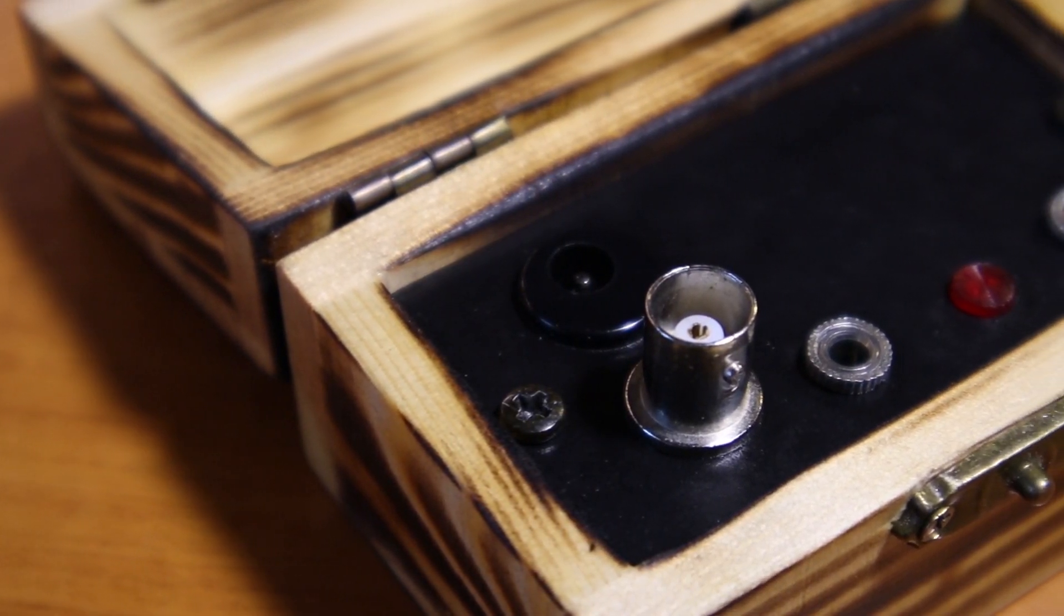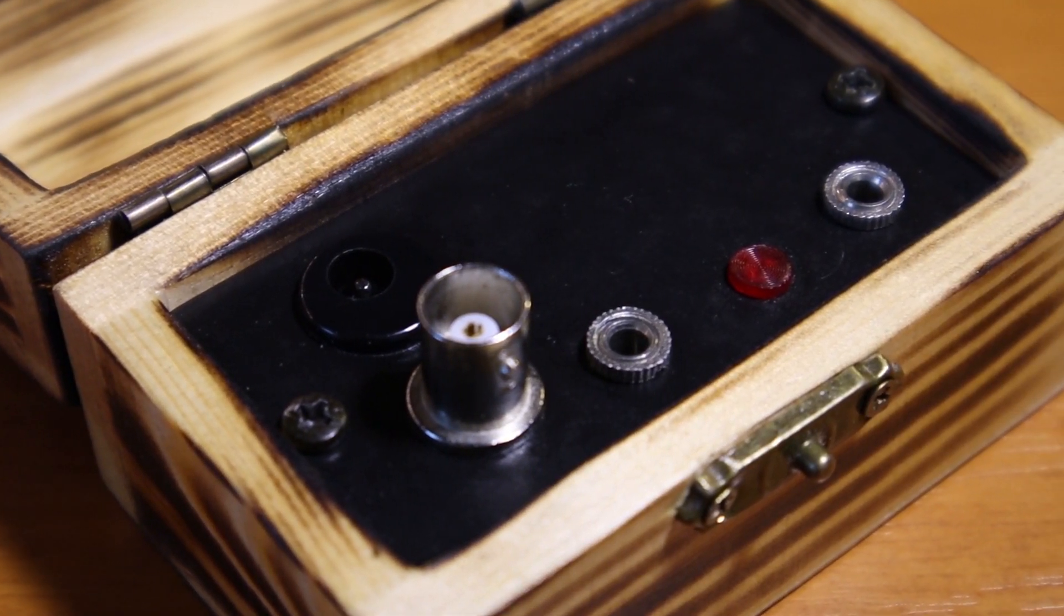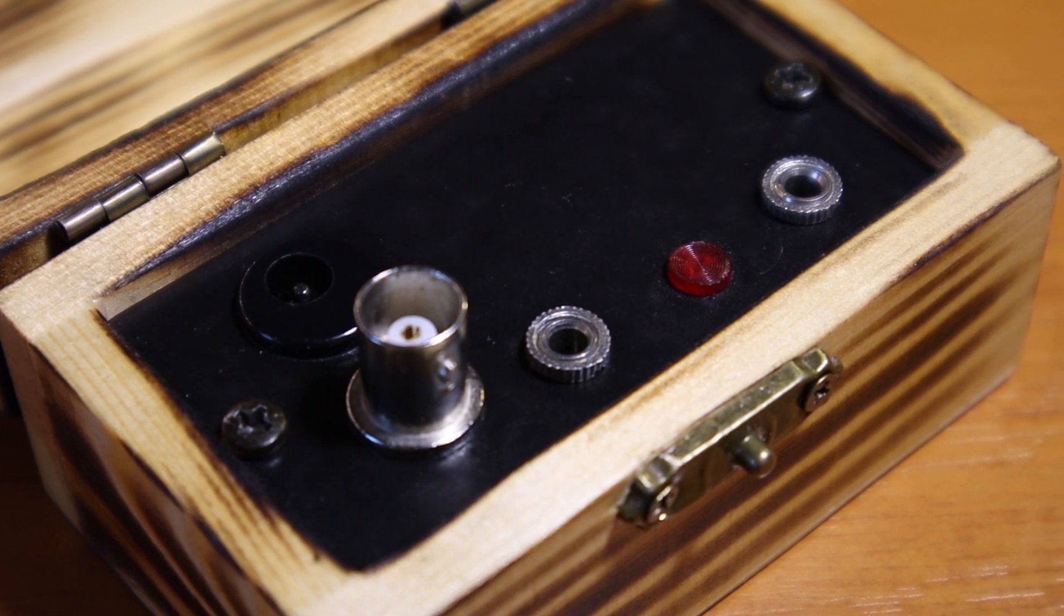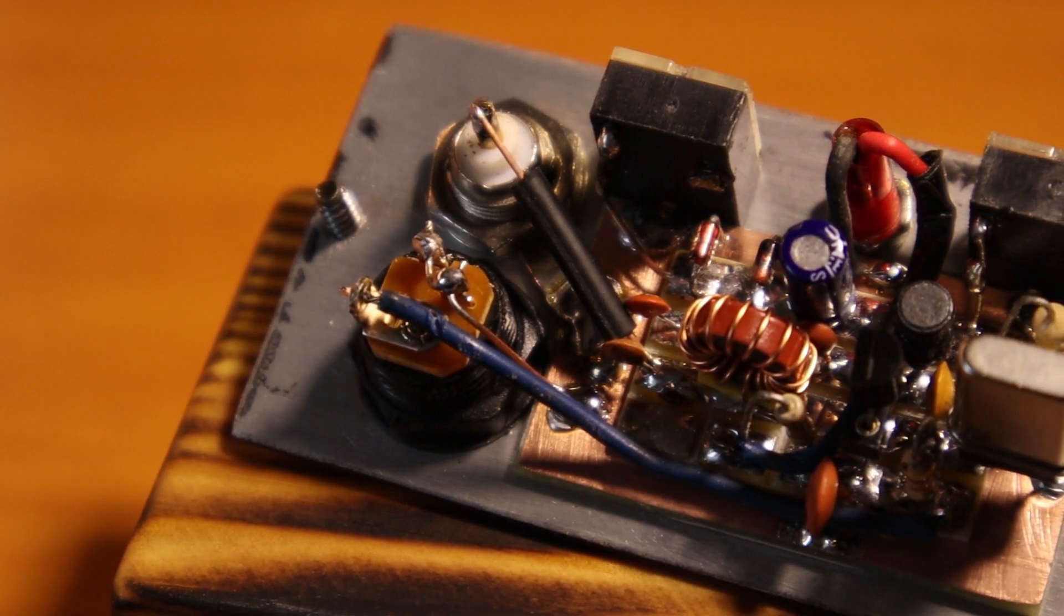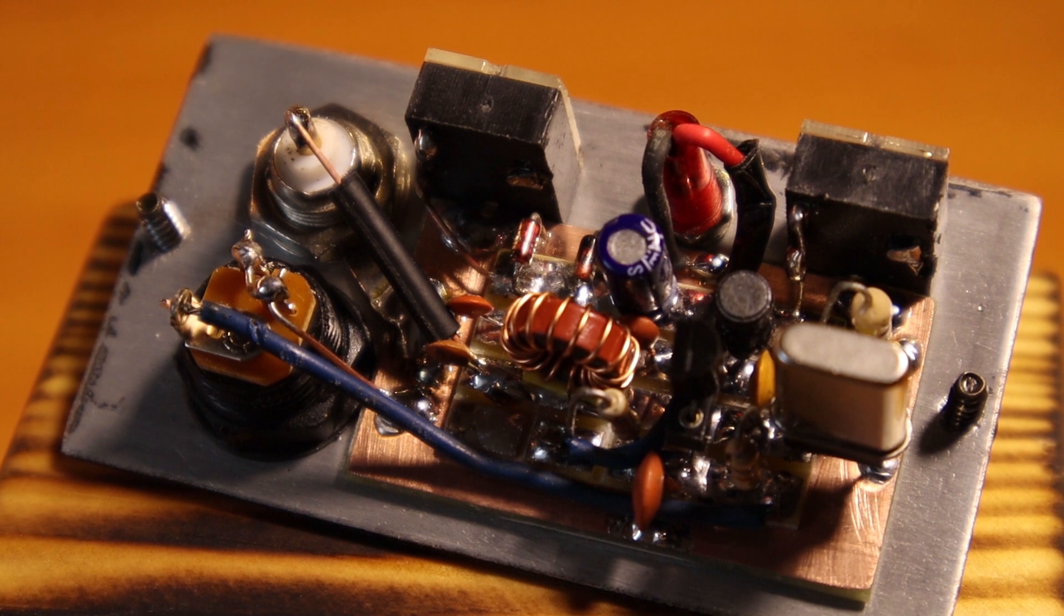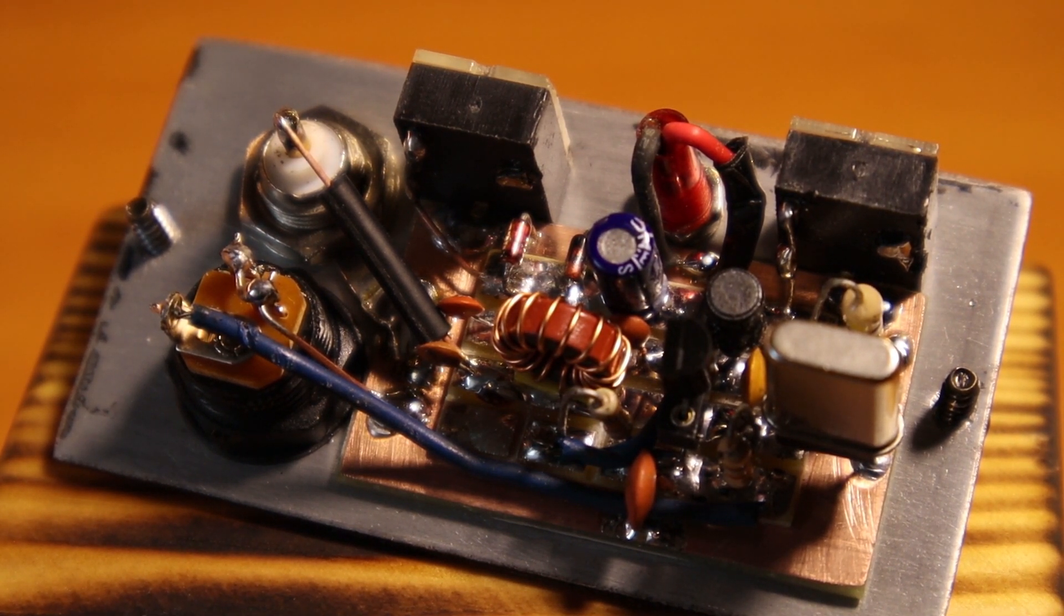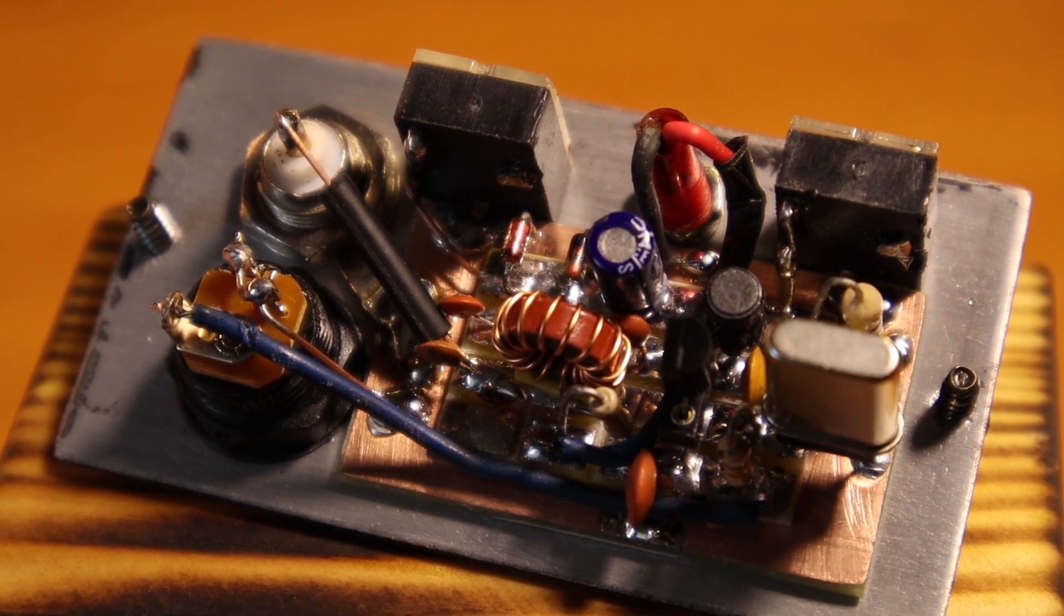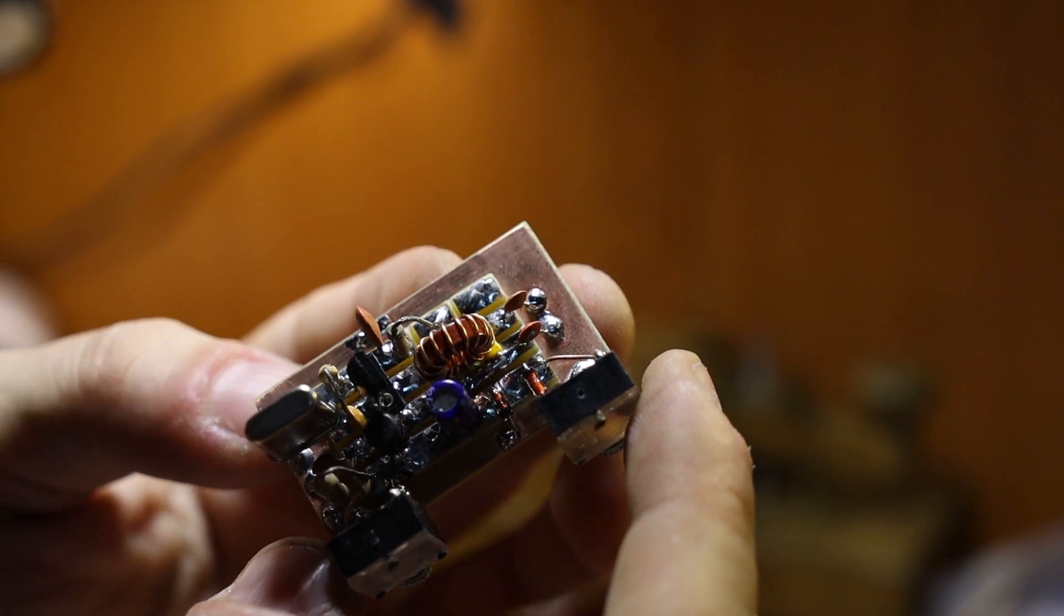I'm quite impressed. I still can't believe how well it works. I realized that the issue we had with the first build was the 2N2222 transistor, which I discovered while I was working on the Michigan Mighty Might because I had the same issues with low power output. I'm going to talk about the Michigan Mighty Might transmitter in a later video.